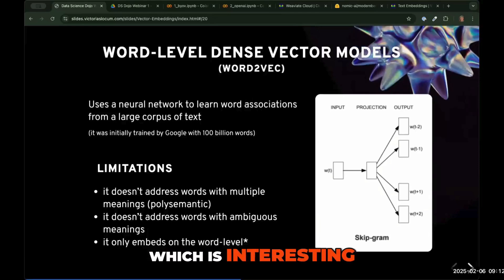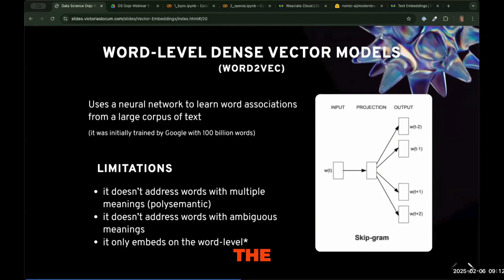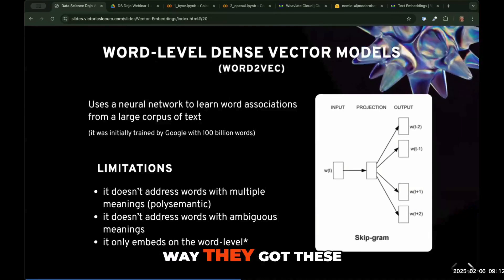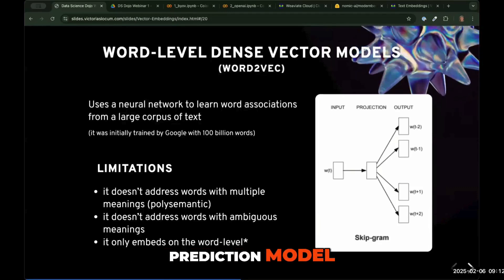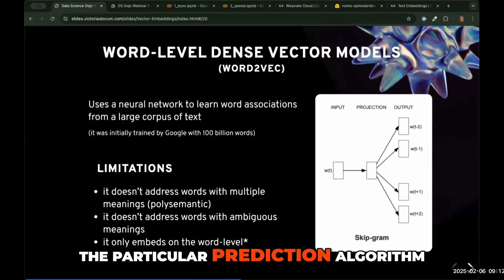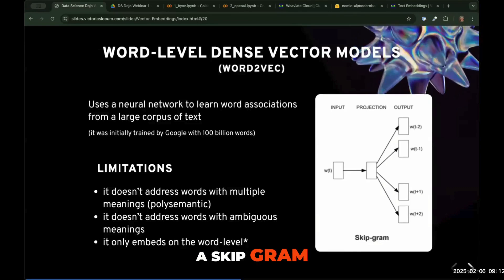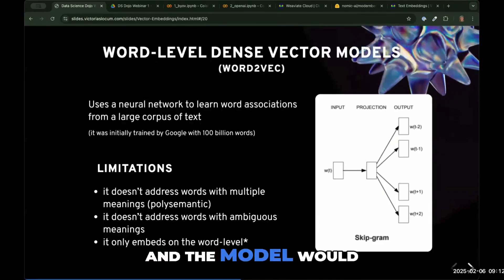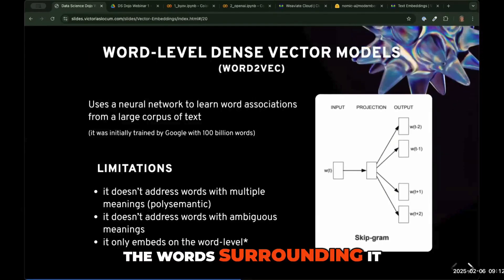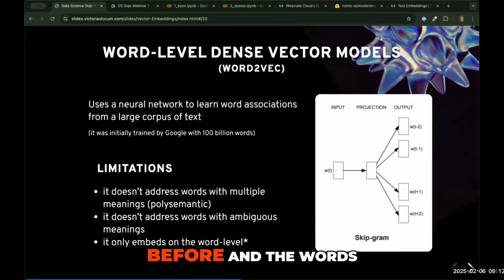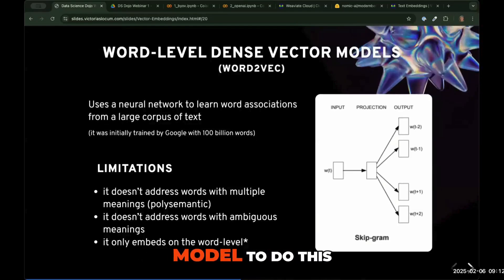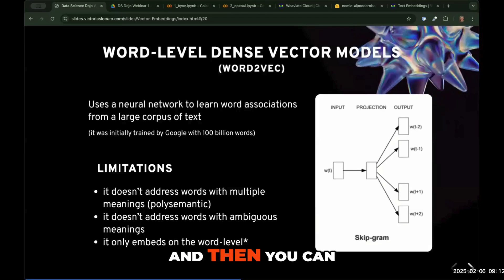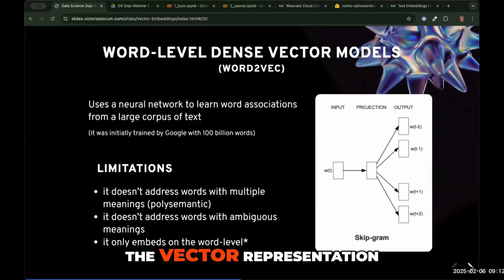The way they got embeddings from this model is through a prediction model. The particular prediction algorithm they used was called a skipgram. Basically, you input a word and the model tries to predict the words surrounding it — the words that came before it and after it. Surprisingly, when you train a model to do this prediction task, it gets really good at learning what a word means, and you can take that vector output as the vector representation.